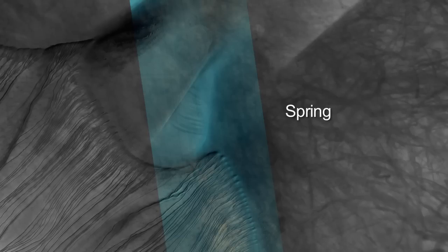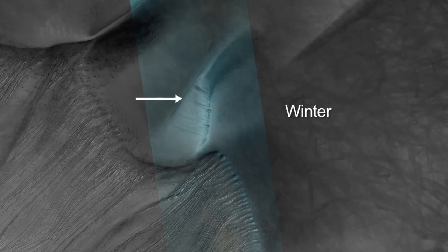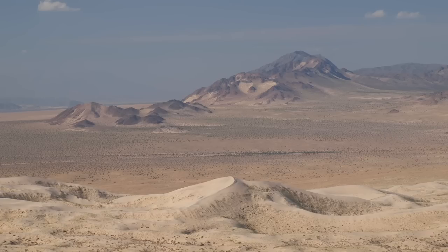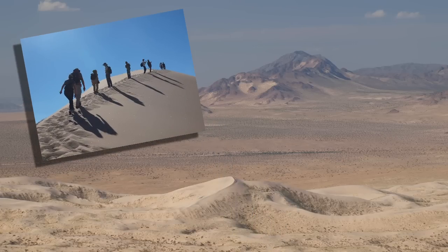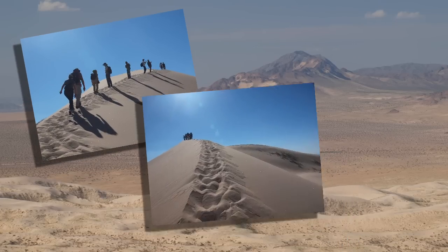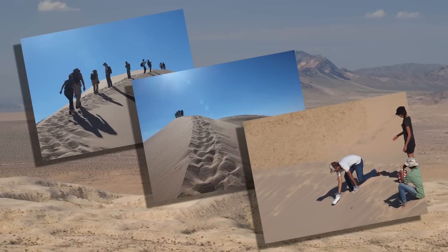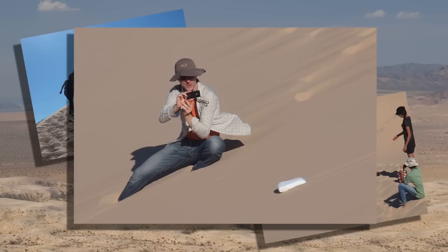Frozen carbon dioxide accumulates on the surface, and we think that some of this accumulation will compress down and actually form ice slabs and ice blocks. We bought some frozen carbon dioxide — dry ice blocks — and we took it out to a dune slope and we put it down and we saw what happened.